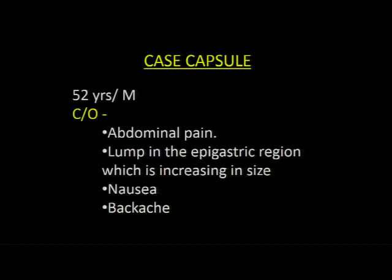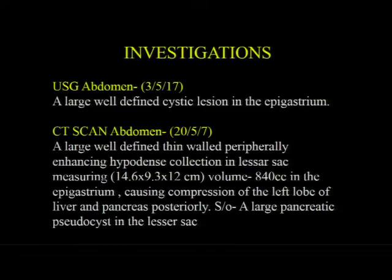A 22-year-old male patient presents with abdominal pain, a lump in the epigastric region which is increasing in size, nausea, and backache. USG abdomen revealed a large well-defined cystic lesion in the epigastrium. CT scan abdomen showed a large well-defined thin-wall, peripherally enhancing hypodense collection in the lesser sac, measuring 14.6 x 9.3 x 12 cm, volume 840 cc, causing compression of the left lobe of liver and pancreas posteriorly, suggestive of a large pancreatic pseudocyst in the lesser sac.